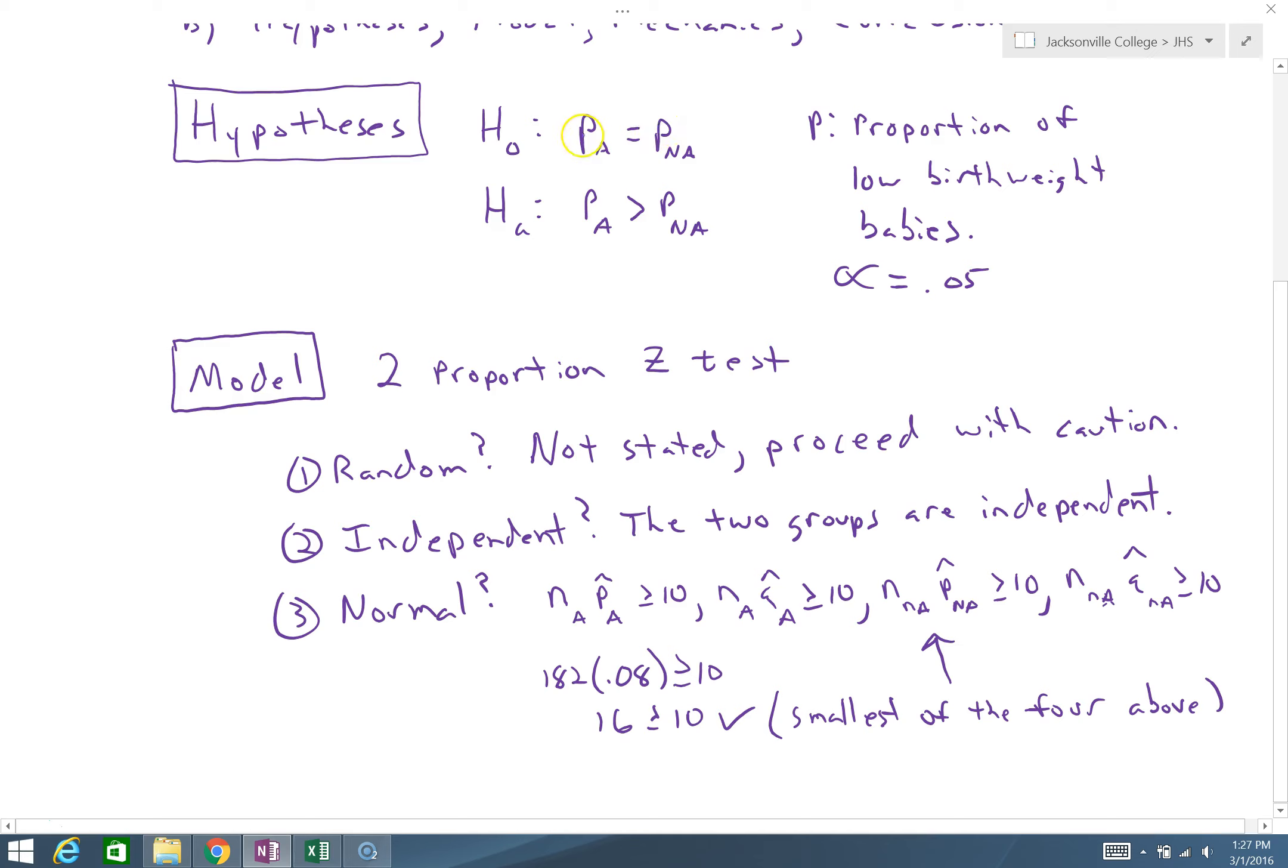Again, we're using the p hat and not our null p, because we don't have a fixed value for our null p. We're just assuming that the two proportions are equal to each other. When we did our one sample test, we did have some fixed null proportion. Here we're just saying these two numbers are equivalent.